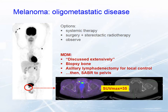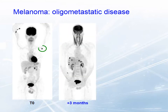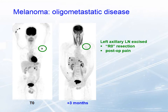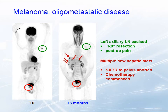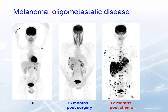And now we were giving this patient false hope. The node was excised as an R0 resection with clear margins. The patient had postoperative pain — evidenced by the fact that at baseline he could put his arms above his head for the PET scan, but three months later he couldn't, keeping his arms down by his side. His PET scan at that time point showed multiple new hepatic metastases. The pelvic bone metastasis had progressed slightly; stereotactic radiotherapy was aborted and chemotherapy commenced. Unfortunately, two months later there was extensive progression and the patient died shortly after.